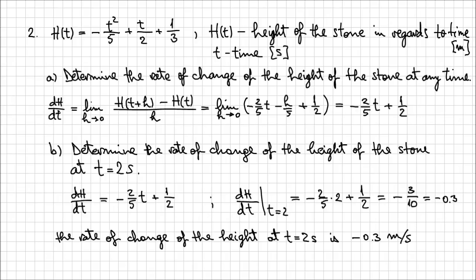It's negative because of natural conventions: up is positive, down is negative. So after those 2 seconds, the height of the stone is actually decreasing, as we might expect. I hope you find these examples helpful. Thanks for watching.